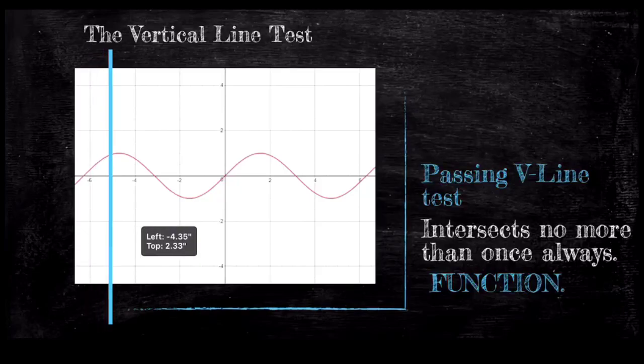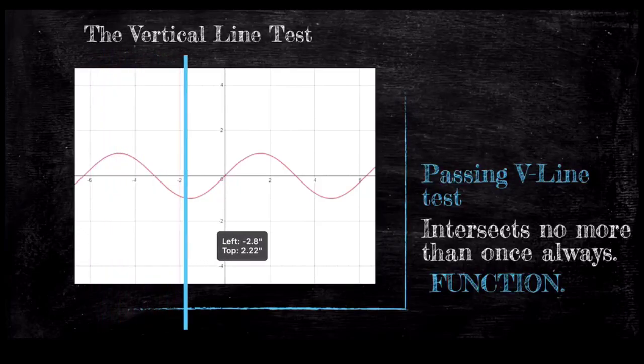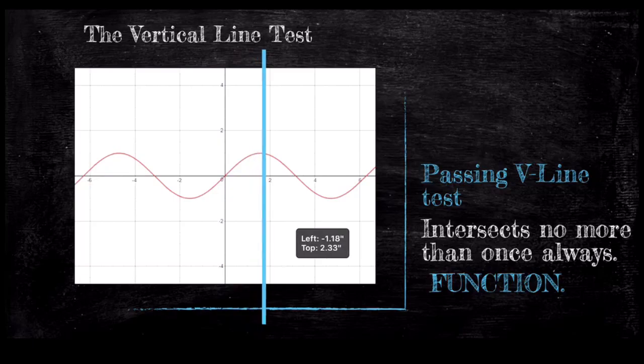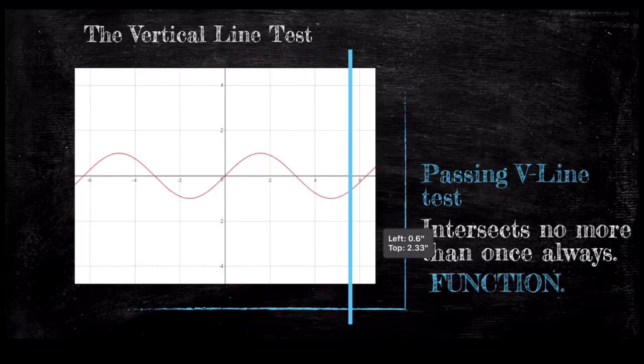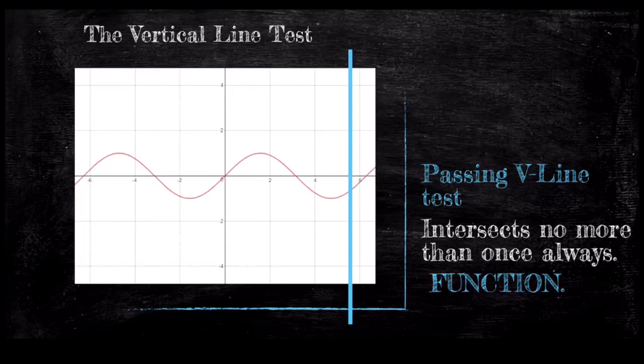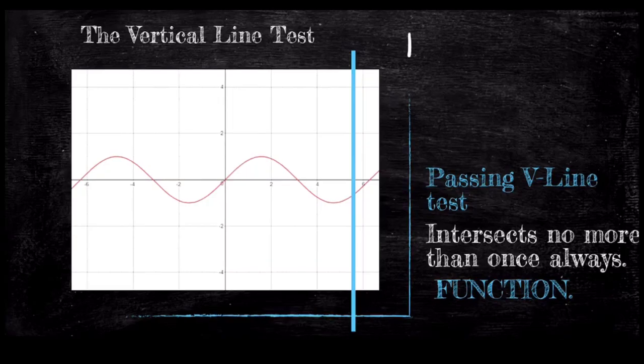We must make sure it passes at all x values, so we drag the line left to right and check. If your function has arrows to indicate the pattern continues, you must imagine dragging the line beyond just the portion you can see. This function never intersects more than once, so it passes the vertical line test and we can say it is a function.